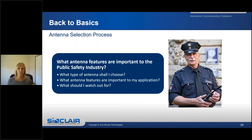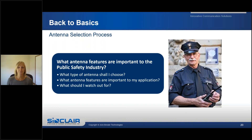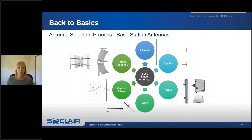Now let's talk about the antenna selection process and what questions you should ask yourself. What antenna features are important to the public safety industry? What type of antenna should I choose? What antenna features are important to my application, and what do I need to look out for? Types of base station antennas available include collinears, dipoles, panel antennas, Yagis, ground plane, and corner reflectors.